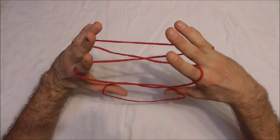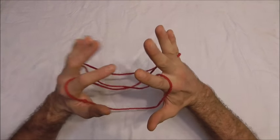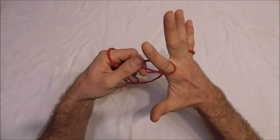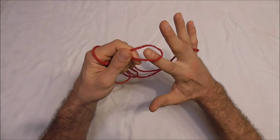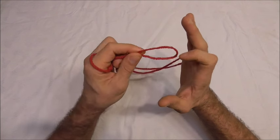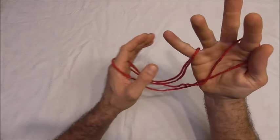Then release the thumbs. Now go to your right hand, take the pointer finger's loop off the pointer finger, and give it a full 360-degree twist towards you.